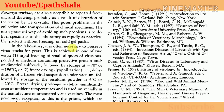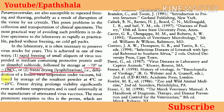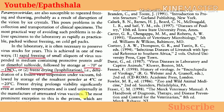In the laboratory, it is often necessary to preserve virus stocks for years. This is achieved in one of two ways: (1) rapid freezing of small aliquots of virus suspended in medium containing protective proteins and/or dimethyl sulfoxide, followed by storage at –70°C or –196°C; or (2) freeze drying, i.e. dehydration of a frozen viral suspension under vacuum, followed by storage of the resultant powder at 4°C or –20°C. Freeze drying prolongs viability significantly even at ambient temperature and is used universally in the manufacture of attenuated virus vaccines.